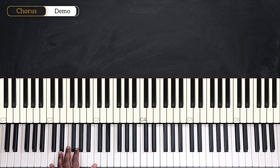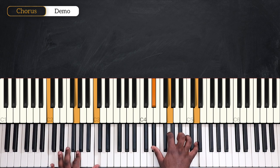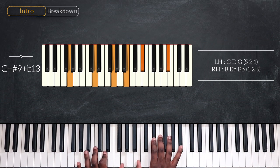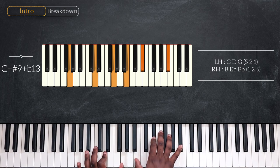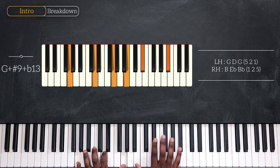We're starting with the first part of the main riff, playing in the key of C minor, and for the chords we're starting with G sharp 9 with a flat 13. On my left I have G, D and G, playing B, E flat and B flat on my right hand.